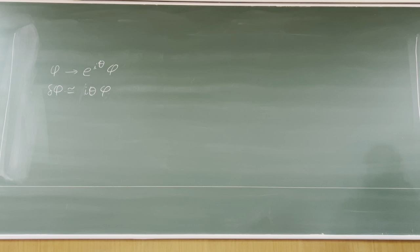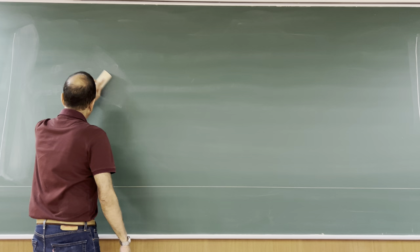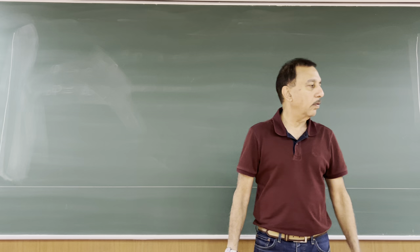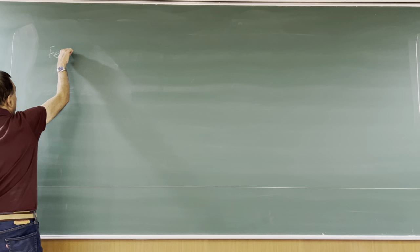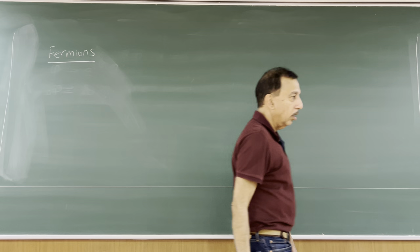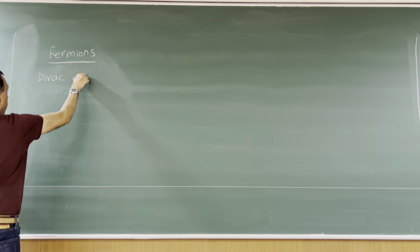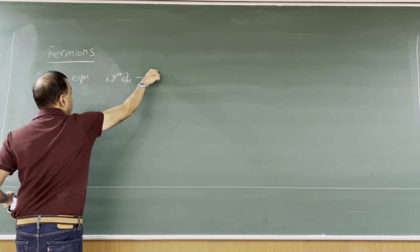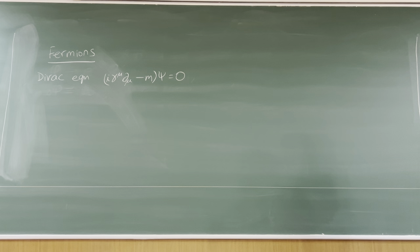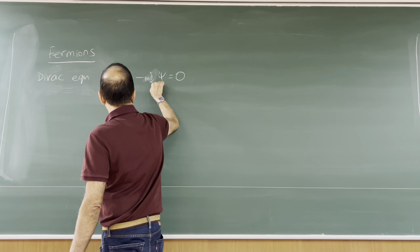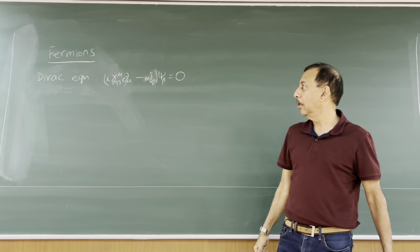Last time we finished talking about scalars. I know I rushed through the Euclidean time or imaginary time business, but it's in the notes and we will revisit it when we do path integrals. Today we are going to do fermions. The first thing we know about relativistic fermions is that they satisfy the Dirac equation at the free level: (i gamma^mu del_mu - m) psi = 0. You should always keep in mind that there are hidden spinor indices in this.